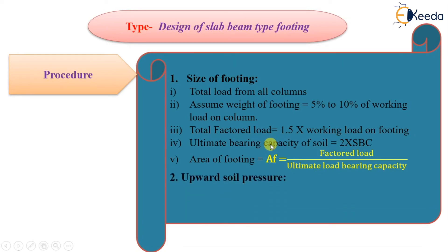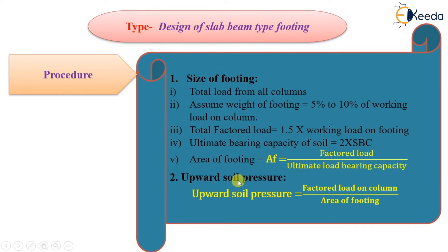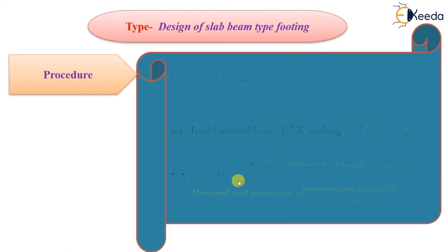Our second step will be to find out the upward soil pressure. For that, we have the formula: factored load on the column divided by area of footing. Remember that we have to consider only the load coming from the column. After finding out the ultimate upward soil pressure, we will find out the projections.